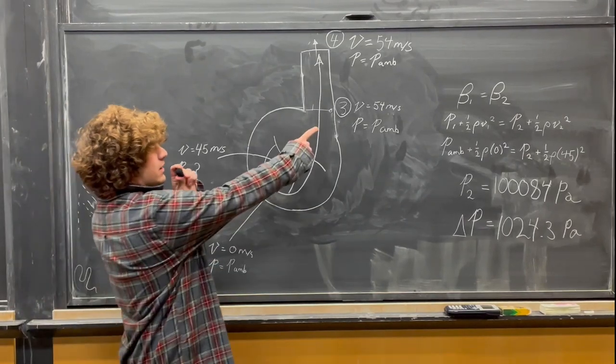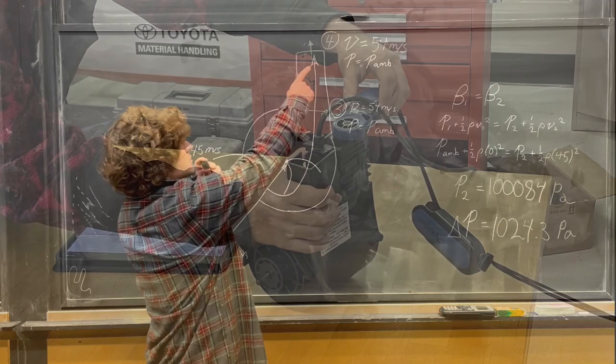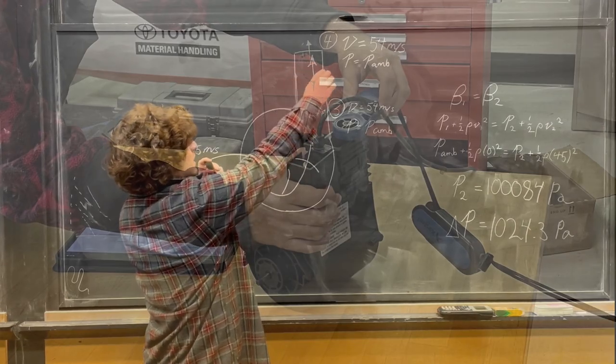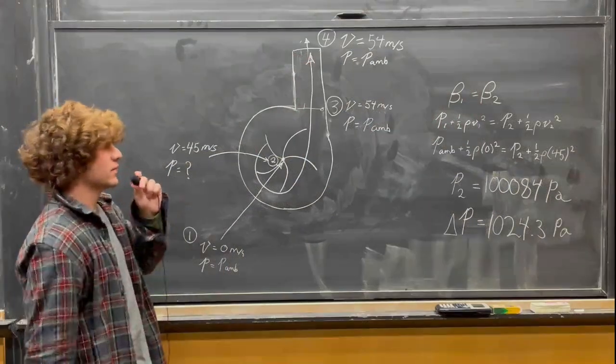At state three, which we derived based on state four. At state four, we measured the fluid flow again with the anemometer to be 54 meters per second, and intuitively we know that pressure here is ambient.